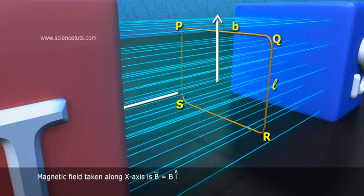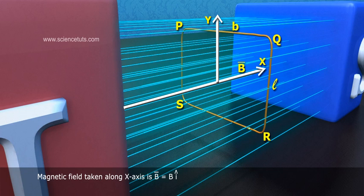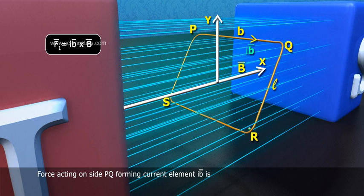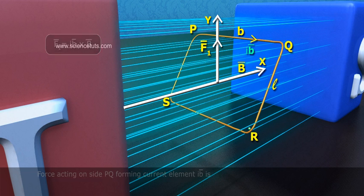Magnetic field taken along X axis is B bar equals to B I cap. Force acting on side PQ forming current element IB bar is F1 bar equals to IB bar cross B bar.